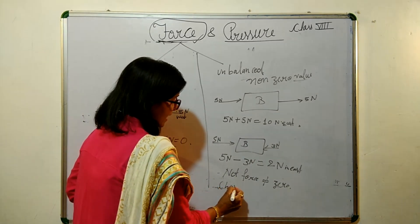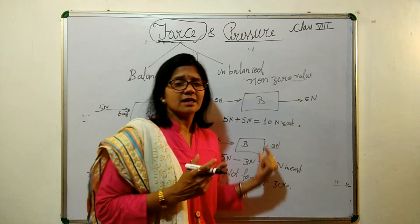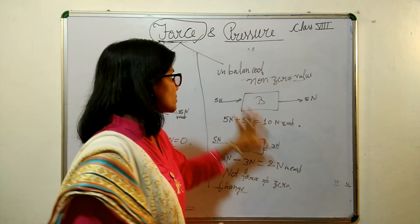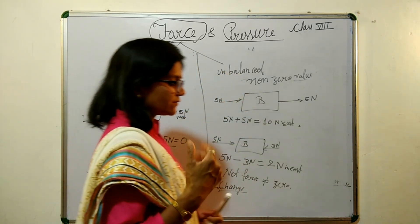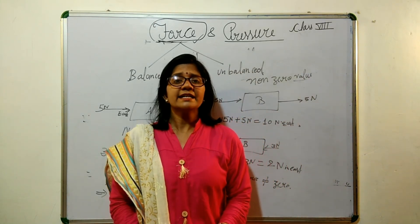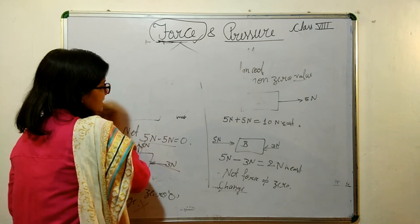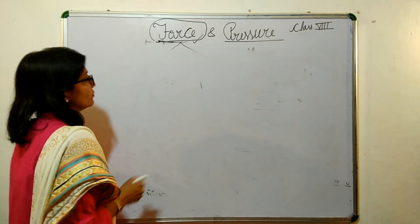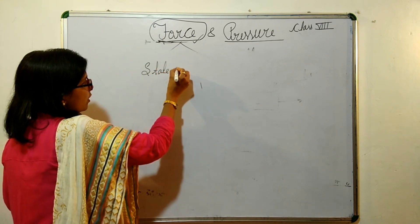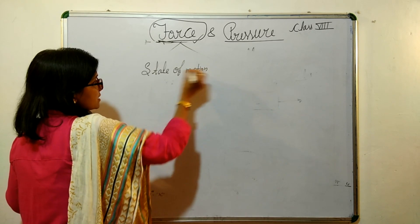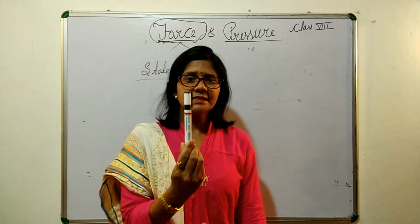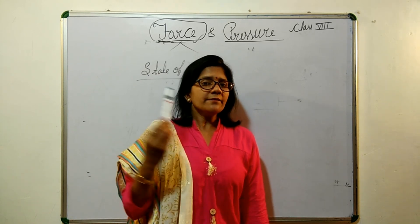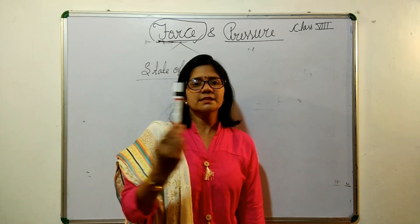Because the unbalanced force comes into action, there will be a change in the state of motion or shape of the object. Force can affect an object's state of motion. If any object is at rest, it has no speed — that is its rest state. If the object is moving continuously with some speed, it is in a dynamic state.